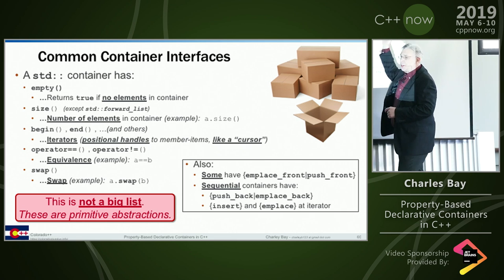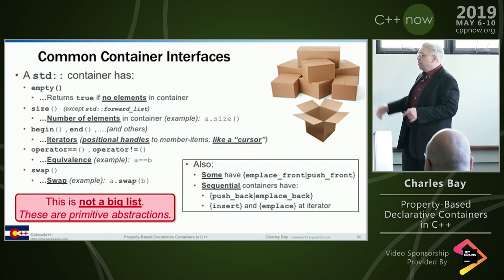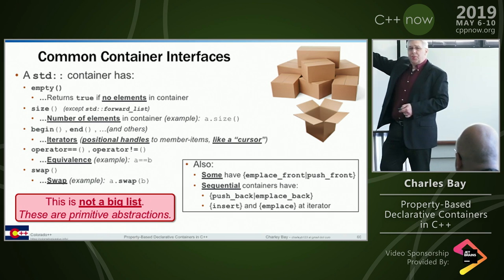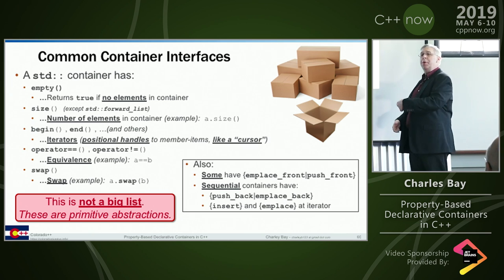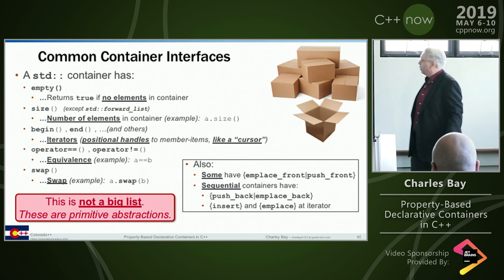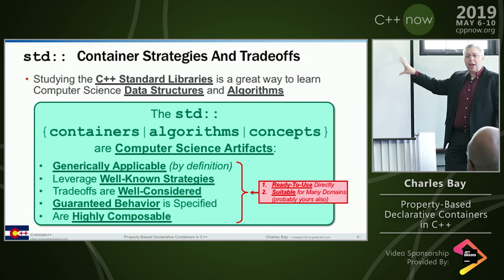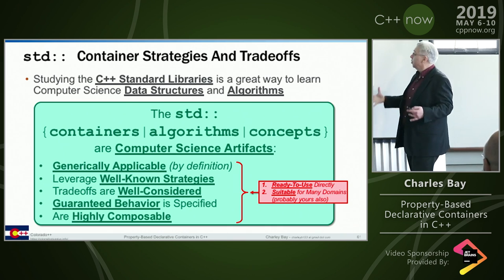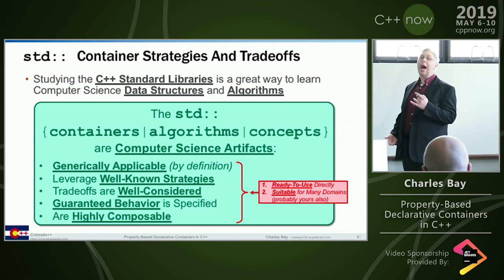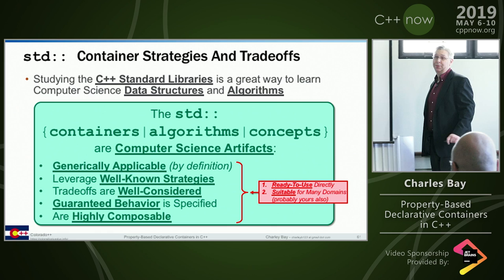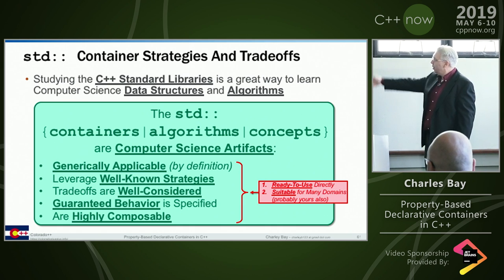Common interfaces: most containers have empty (returns true if nothing's in there), size, begin, end - the iterator thing. Some basic comparison operators, swap. Not a big list because these are artifacts of computer science we use to reason about behavior. That's why we want these to be leaky abstractions - to reason about what's going to happen at runtime when we employ them. The strategy and trade-offs are well-considered - this is computer science going back decades. What we've got are generically applicable, well-known strategies, guaranteed behavior, and highly composable things. That's what the STL is trying to do.